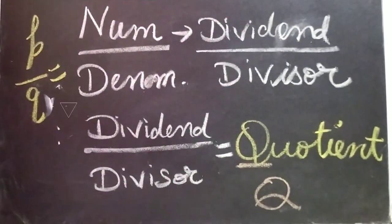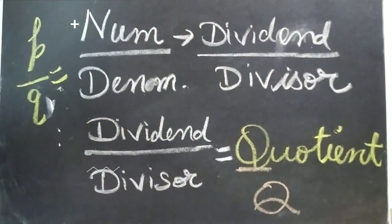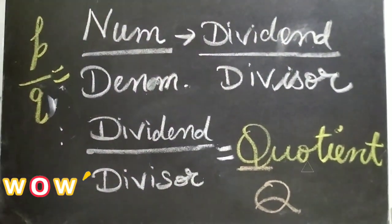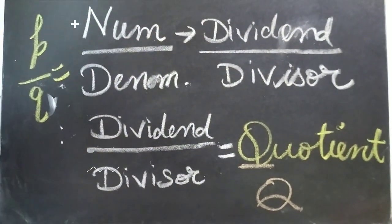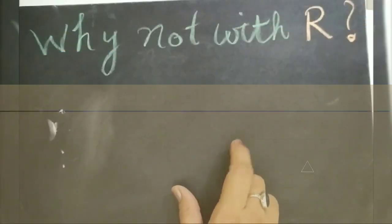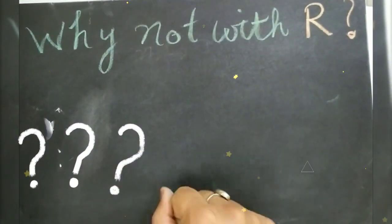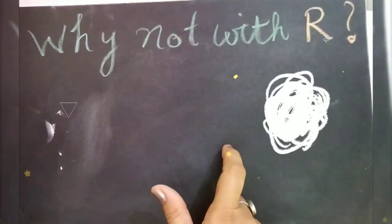So rational numbers are represented with Q and not by R. But now what is the problem with R? Why not with R? What is the reason why it cannot be with R?